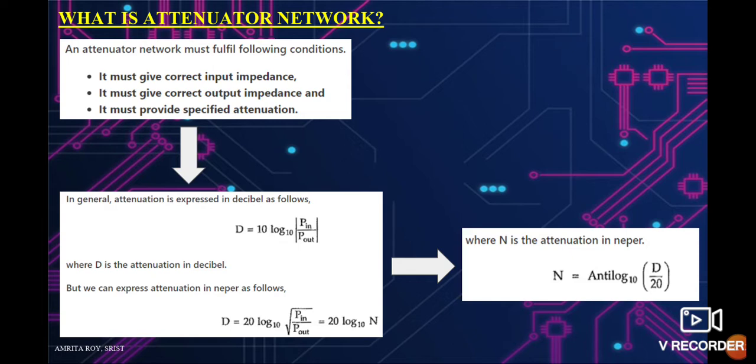In general, attenuation is expressed in decibel as follows: D equals 10 log base 10 of |P_input / P_output|, where D is the attenuation in decibel. We can also express attenuation in Neper as: D equals 20 log base 10 of sqrt(P_input / P_output), which equals 20 log base 10 of N, where N is the attenuation in Neper. We can rewrite N as antilog base 10 of (D / 20).